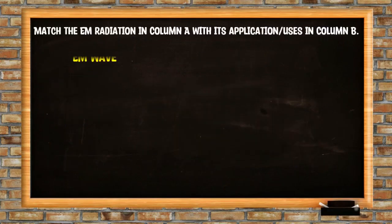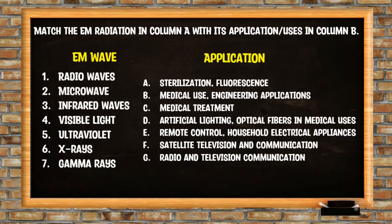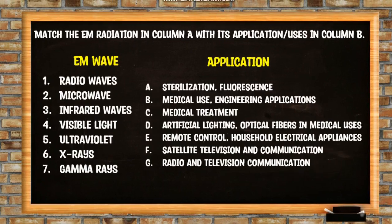In this activity, we have to match the EM radiation in column A with its application and uses in column B. Are you ready? Let us answer this. First, we have the radio waves. What do you think is the application of the radio waves? Yes, it can be used for remote control of household electrical appliances. How about the visible light?